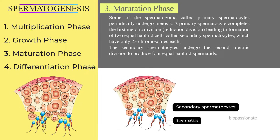These two equal haploid cells are called secondary spermatocytes. Secondary spermatocytes have only 23 chromosomes. The secondary spermatocytes then undergo the second meiotic division to produce four equal haploid spermatids.